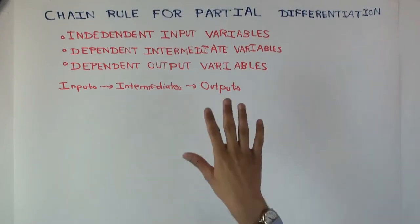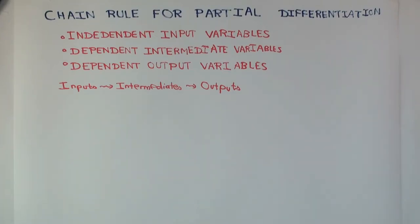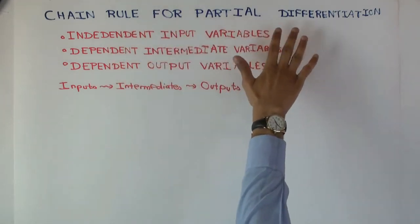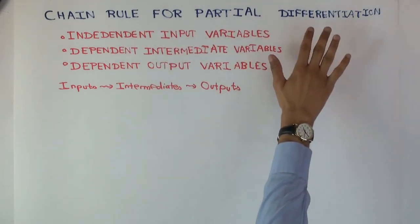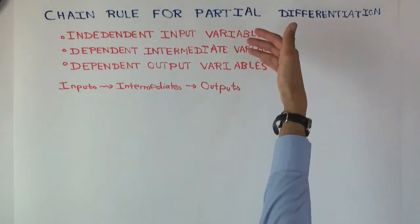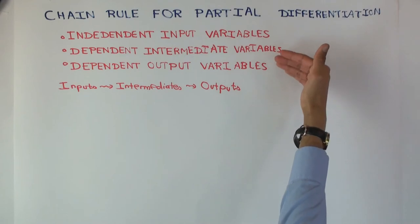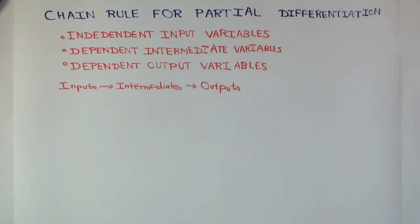In this talk, I'm going to say conceptually what the chain rule for partial differentiation says when you have a bunch of inputs, a bunch of intermediates, and a bunch of outputs.